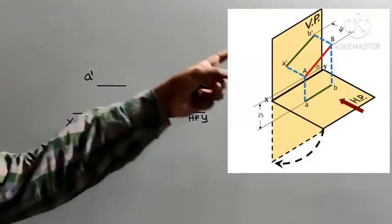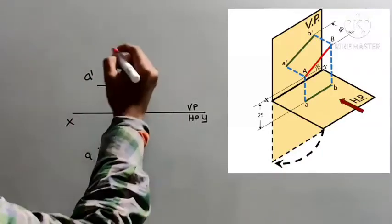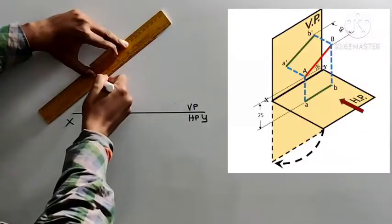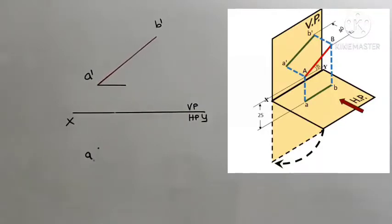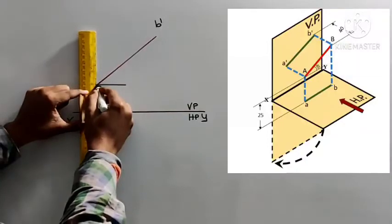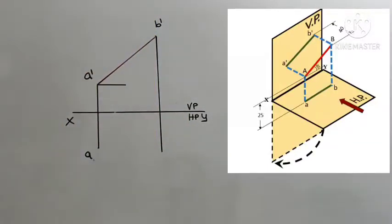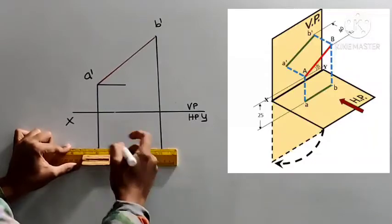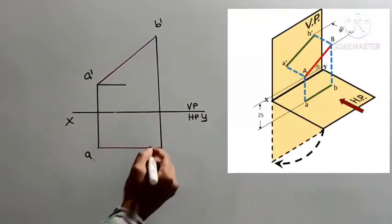Next, draw the front view. You know the angle and you know the length, so you can directly draw it. From A', make a 45-degree line of length 65mm. This will give B'. Next, you need to draw the top view. Draw projectors from A' and from B'. Then from this point, draw a horizontal line because the line is parallel to the vertical plane. If you do that, you will get the other end of the line, which is B.